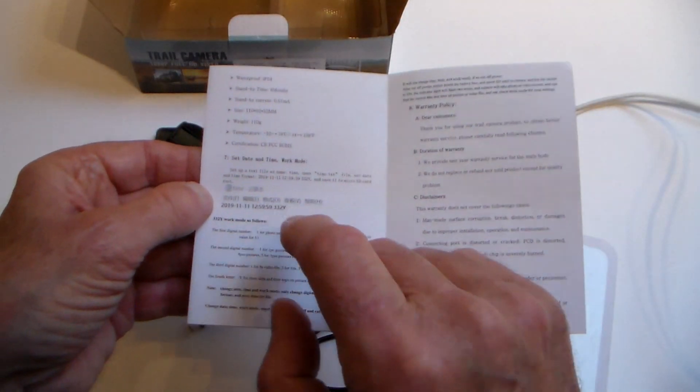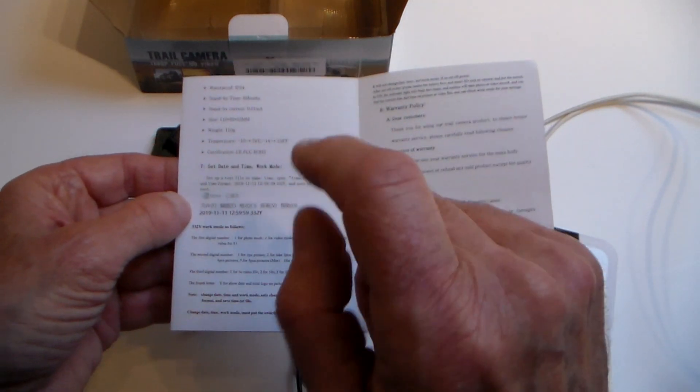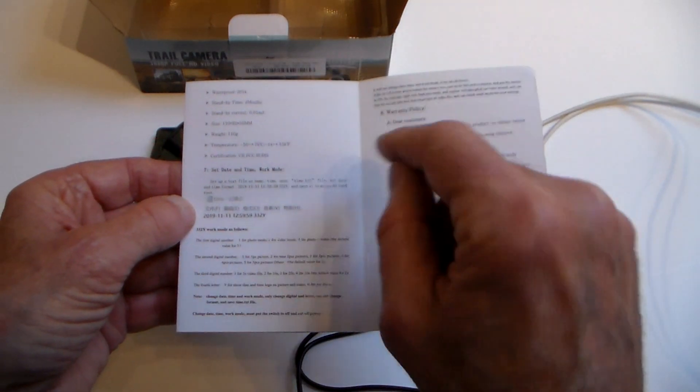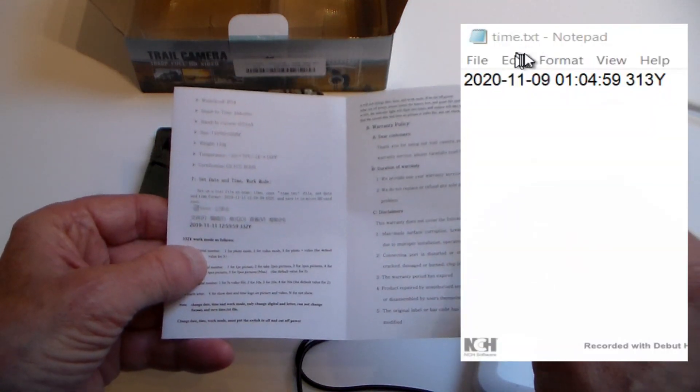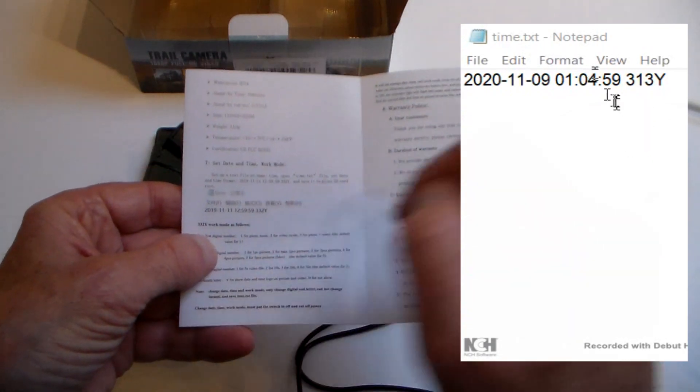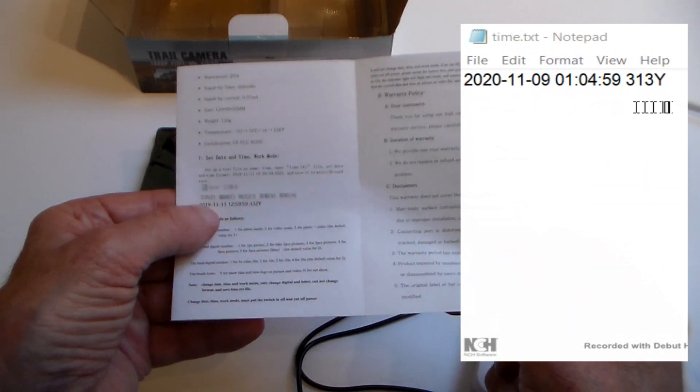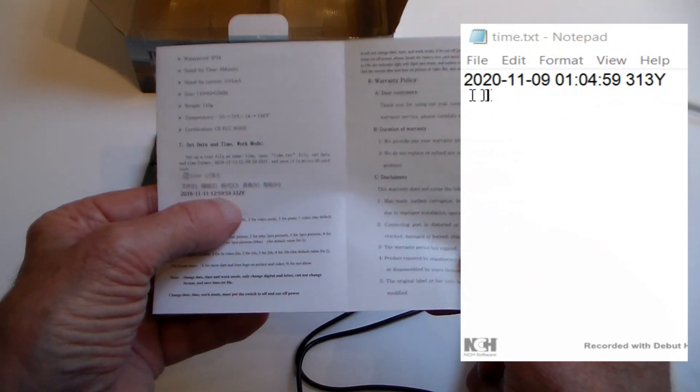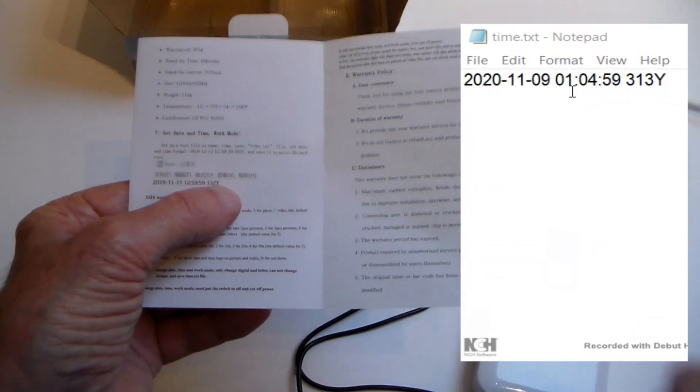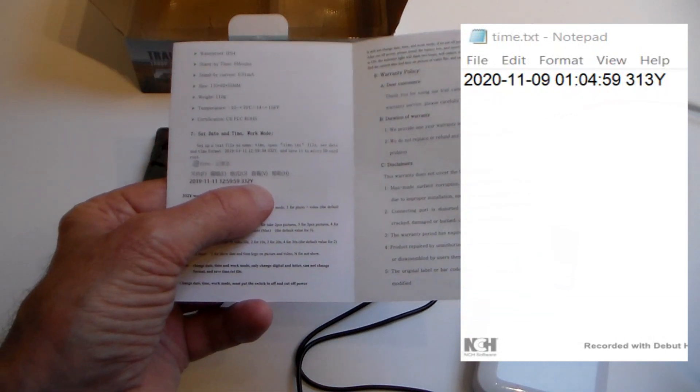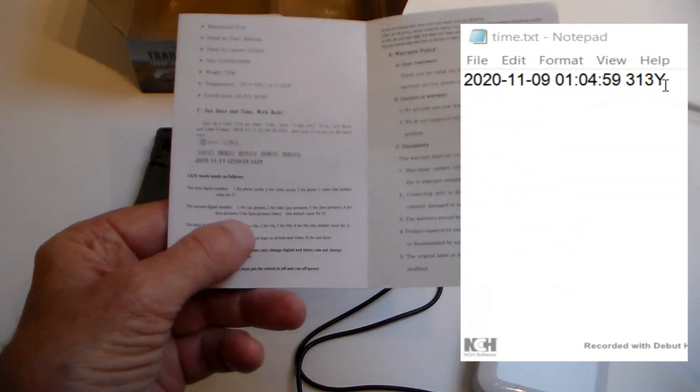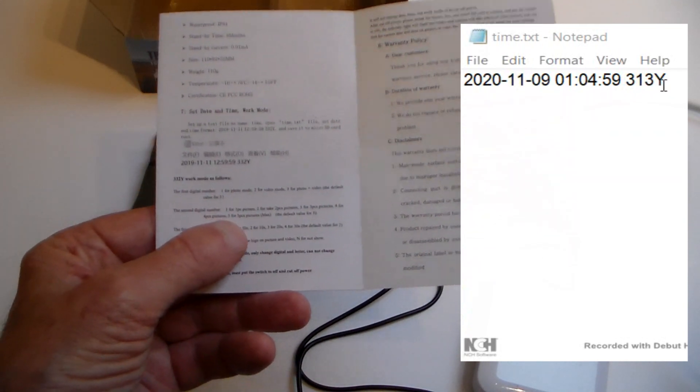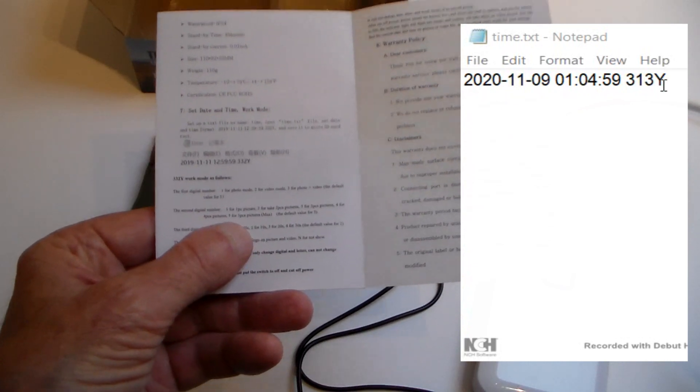But before we get to that, I'll mention how you change settings. Well, read the manual. First time you ever use it, you'll find a file on there that says time text. It's a text file, txt. Now that opens in Windows in notepad, I'll show you it here. It's got on the left hand side the date, it's got in the middle the time, and on the right it's got default is 3-3-2 and a Y. Now those are the codes that tell it whether it's going to take photos, video, and how long the video is going to be.